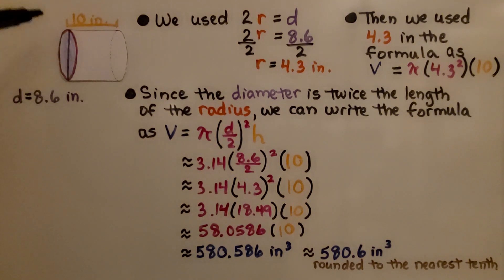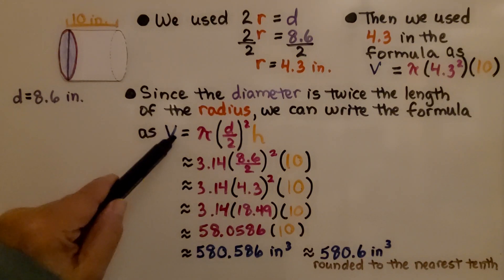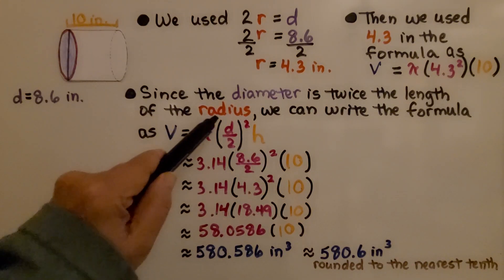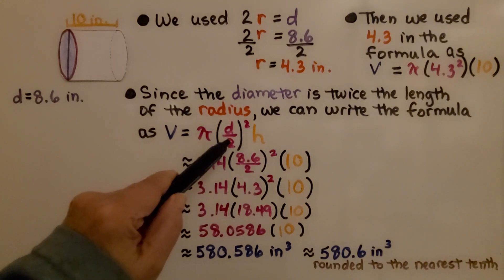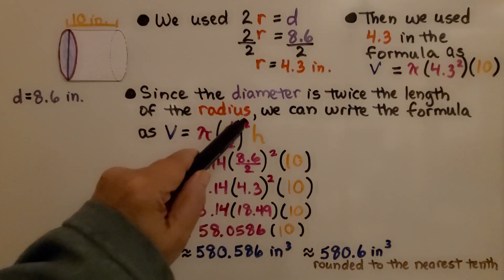Well, since the diameter is twice the length of the radius, we can write the formula as V is equal to pi multiplied by d divided by 2, the diameter divided by 2 squared.